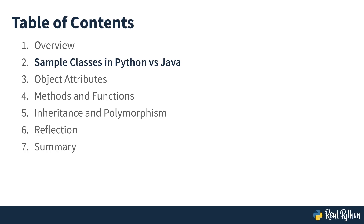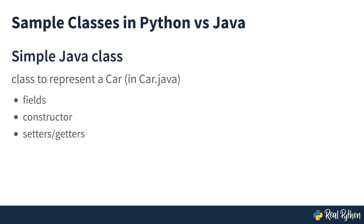In our first lesson, we will compare a simple class written in both Java and Python. Welcome to lesson one of object-oriented programming in Python versus Java. In this lesson, we will look at a simple class written in both Java and in Python. The Java class is going to be in a file called car.java, and it will have the typical organization of a Java class with its fields, constructor, and some get methods.